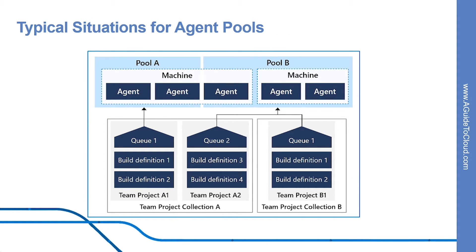Let's look at the typical situations for agent pools. If you have got a lot of agents intended for different teams or purposes, you might want to create additional pools. The first scenario is if you are a member of a project and want to use a set of machines owned by your team for running build and deployment jobs — make sure you are a member of the group in all pools with the administrator role. The second scenario is if you are a member of an infrastructure team and would like to set up a pool of agents for use in all projects. The third scenario is if you want to share a set of agent machines with multiple projects, but not all of them.